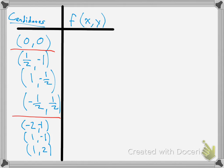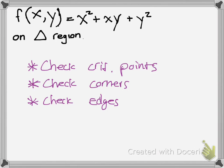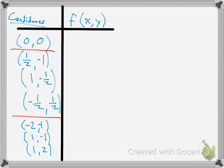So simply, you take these coordinates and plug them into your original function, which is here. Remember, it always goes back to the original function. Then you plug in those values. For (0, 0), you would get 0. For (-2, -1), you would get 7. For (1, -1), you would get 1. And for (1, 2), you would get 7.